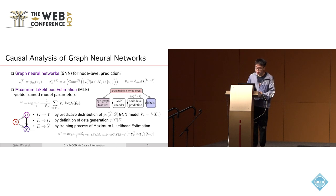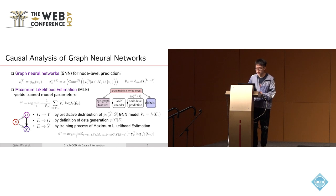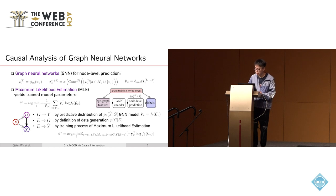We consider how graph neural networks learn in this setting, using a general GNN formulation with feature propagation for node-level representations and prediction, trained via maximum likelihood estimation with a supervised loss. We write down a causal graph capturing dependencies among variables. The first path goes from G to ŷ, induced by the predictive distribution P-theta of the GNN.